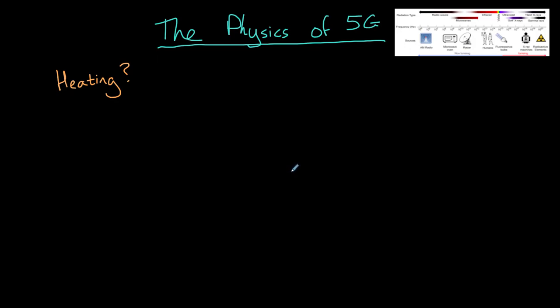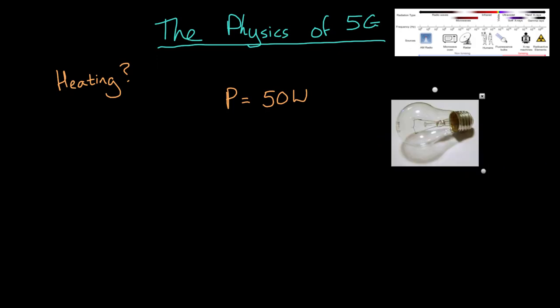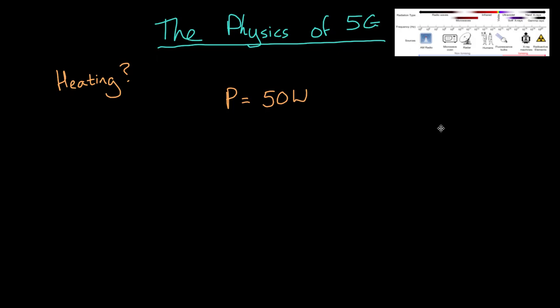In this case, it's the intensity of the radiation, how much energy hits us every second, that matters. Now let's see if that's significant. A typical mobile phone mast has a power of about 50 watts. This means that 50 joules of radiation energy are being produced by the phone mast every second. This is a little bit less than this light bulb. The radiation is emitted in all directions and spreads out as it moves further away.